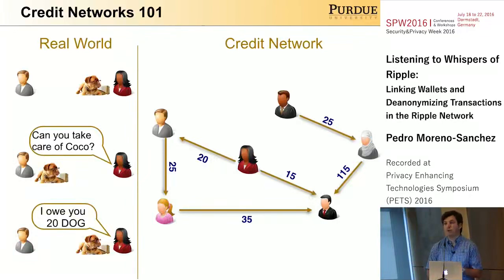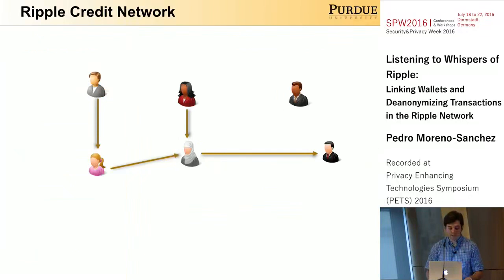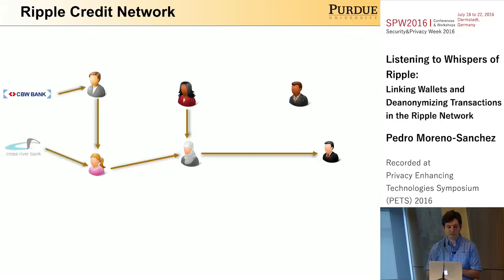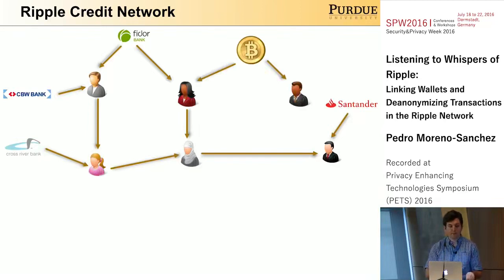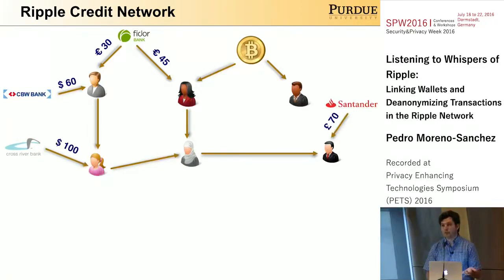In this work, we focus on the Ripple credit network. The key idea here is that the accounts represent not only users, but also banks like CBW and CrossRivers in America. We also have here in Europe the case of Feeder and Santander. Ripple also has Bitcoin gateways that allow the integration of Bitcoin into the Ripple network. Ripple supports several currencies.